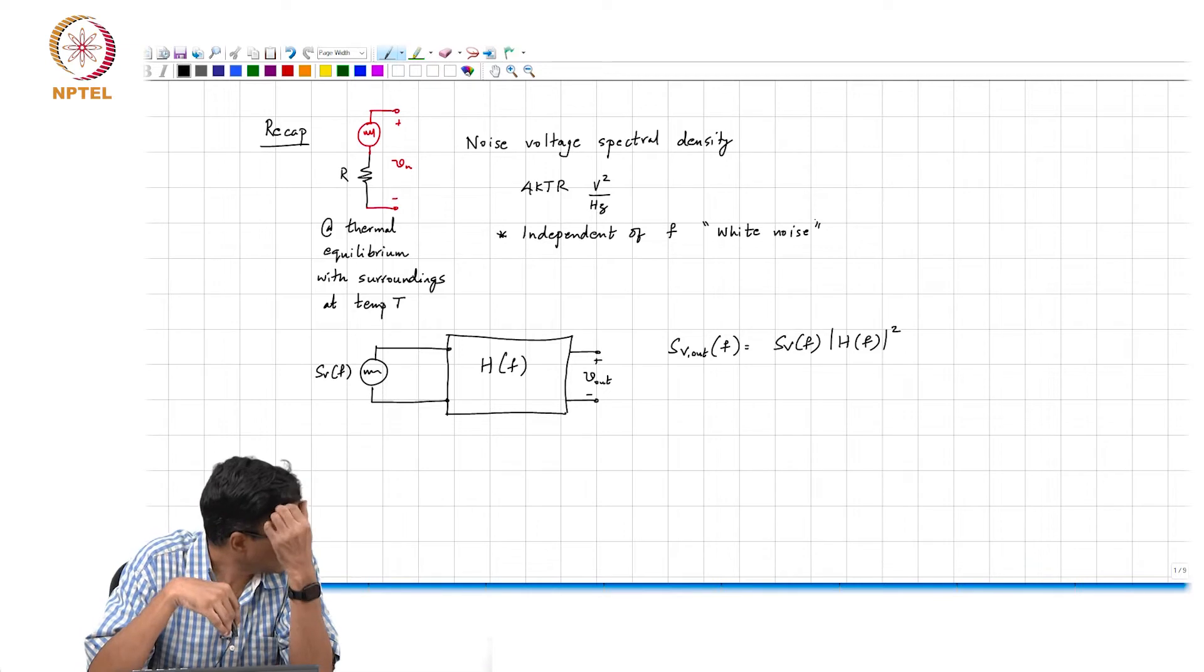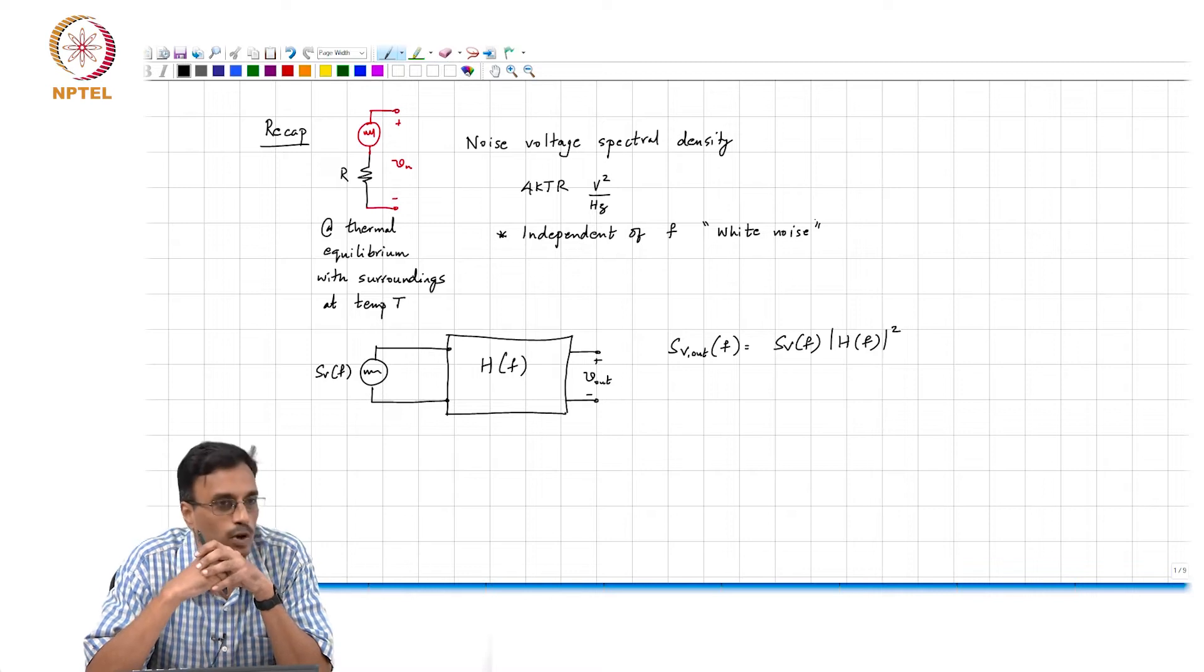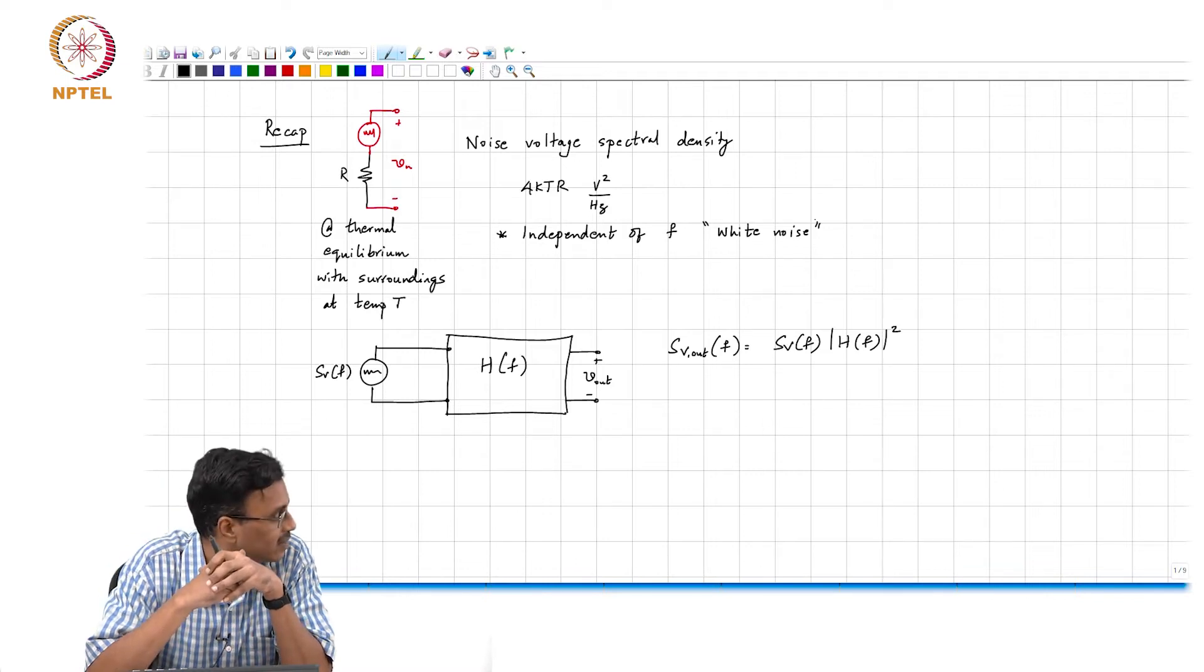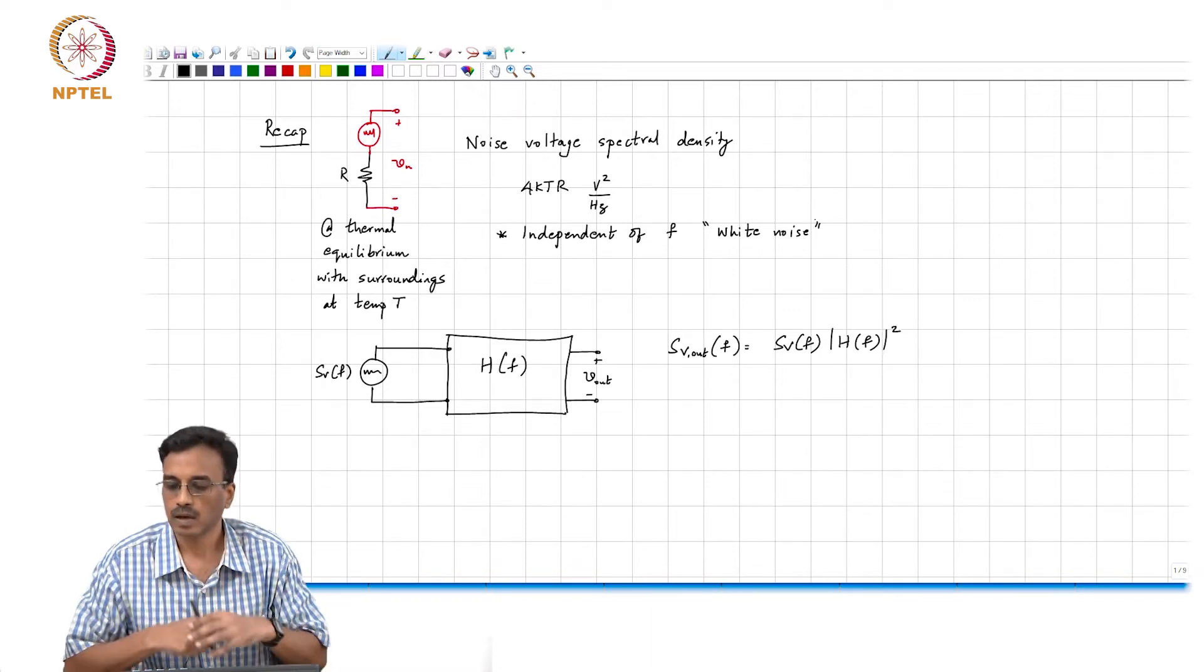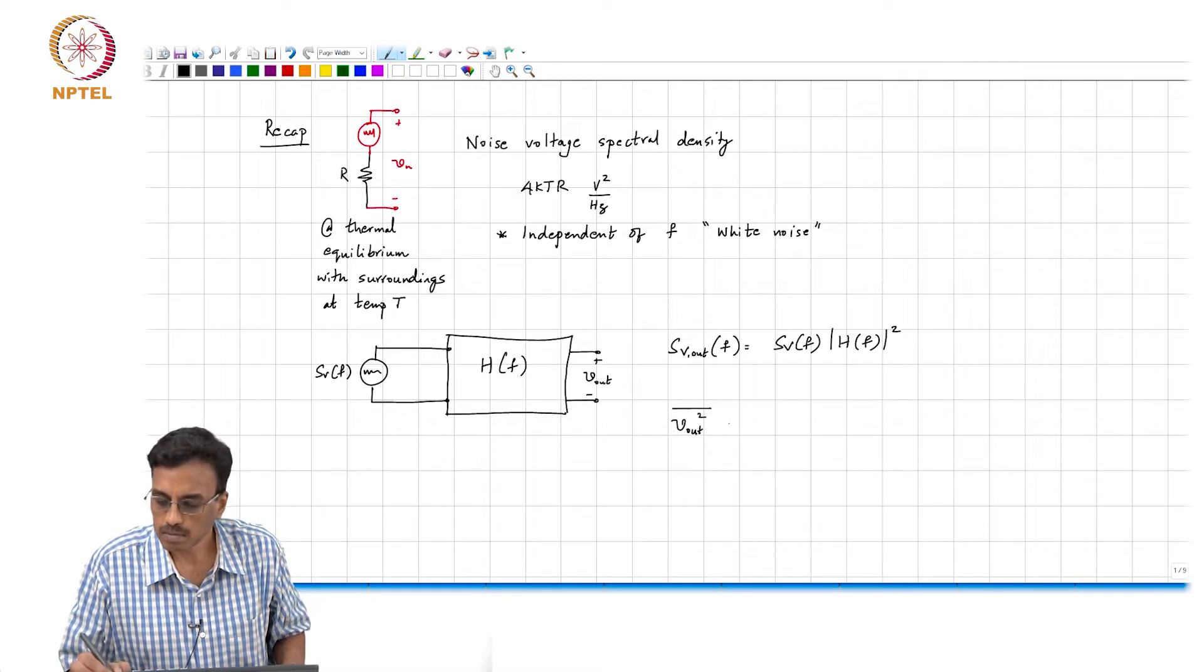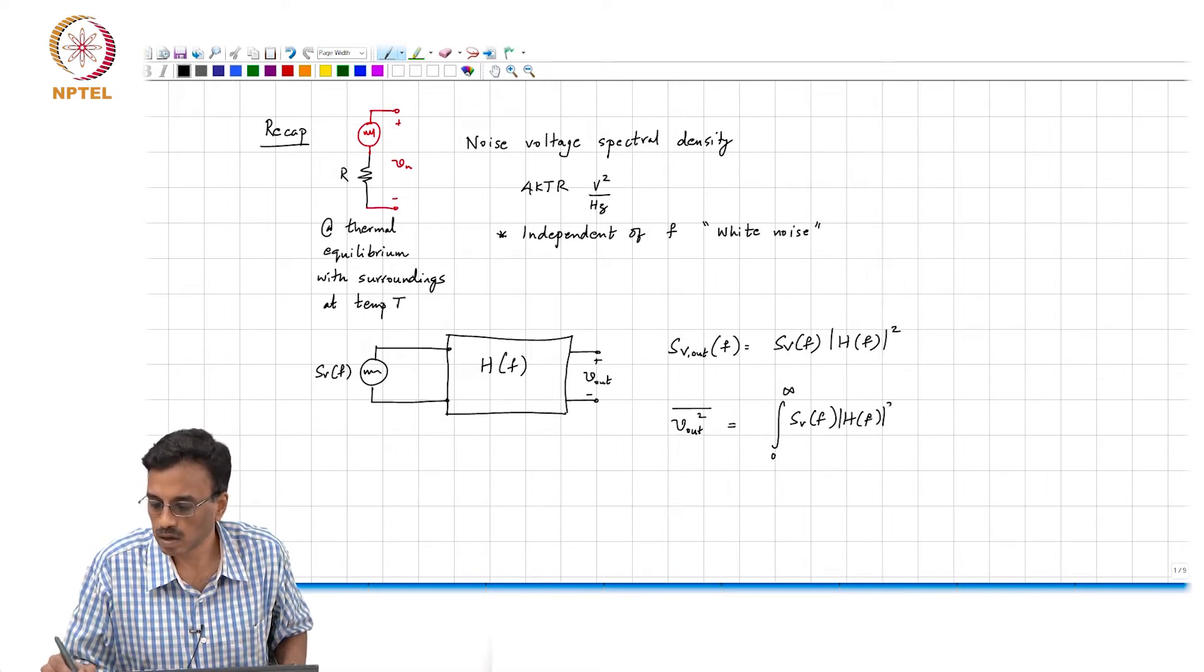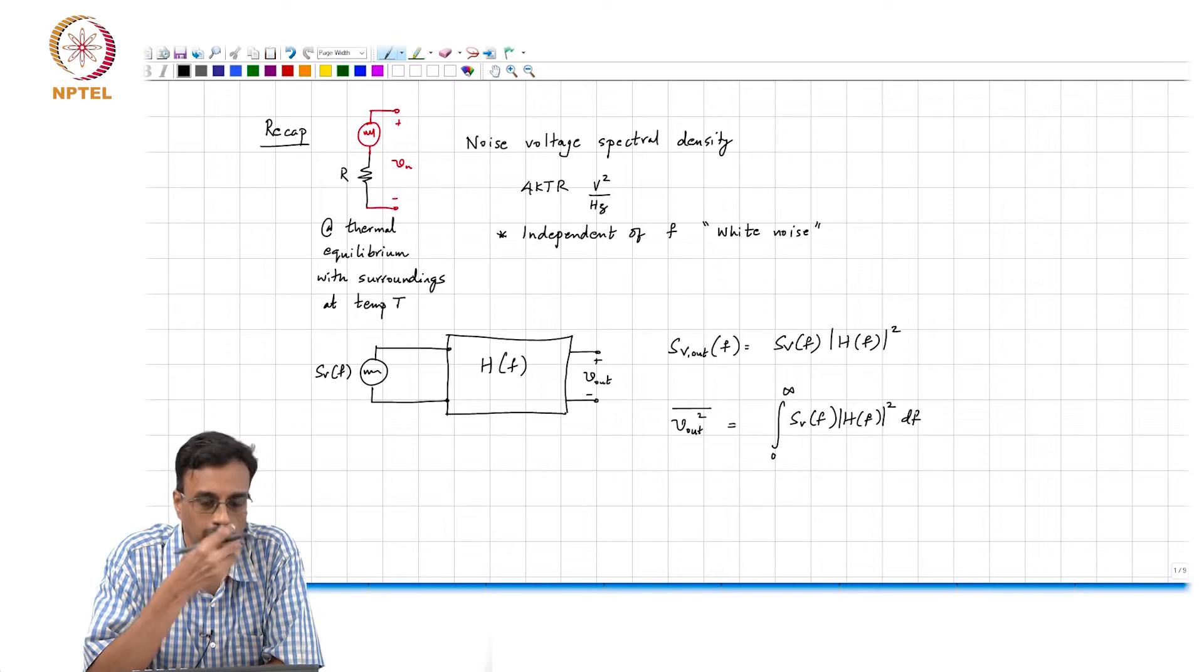Then we saw that if you have a noise source with a noise spectral density given by Sv(f) and it is processed by a transfer function H(f), the output noise spectral density is simply the input noise spectral density multiplied by the squared magnitude of the transfer function. And the total noise is simply the integral of the noise spectral density at the output.